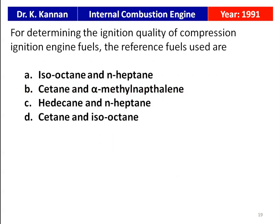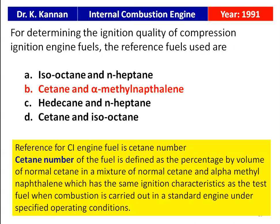The next question is from the 1991 question paper. For determining the ignition quality of compression ignition engine fuels, the reference fuels used are cetane and alpha-methylnaphthalene. For a diesel engine, we calculate the cetane number, which is defined as the percentage by volume of normal cetane in a mixture of normal cetane and alpha-methylnaphthalene having the same ignition characteristics as the test fuel under specified operating conditions.